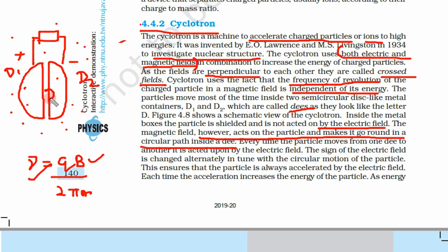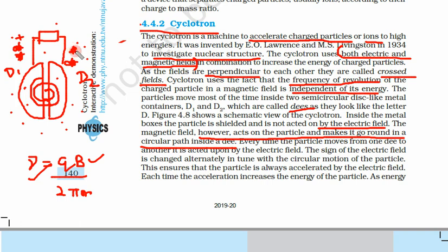The particle moves in a circular path, but as soon as it reaches the end of the D, the polarity suddenly reverses — this D becomes negative, that one becomes positive — so it accelerates again. Because of this acceleration, its velocity increases, and its path becomes larger. When it reaches the other end, the polarity reverses again. We know when the particle will arrive because we know its frequency, so it moves in successive semicircular paths.